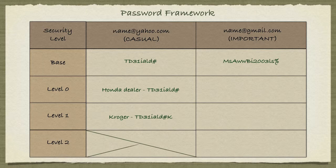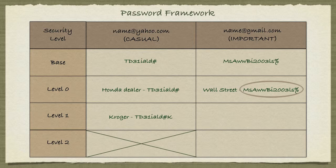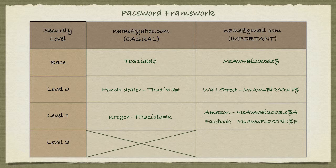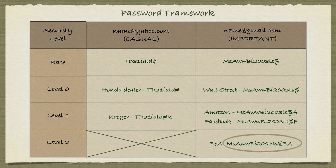I typically don't need level two security for casual sites. For my Wall Street Journal subscription I may use the important ID with level zero security. For Amazon I use the important ID with level one security, appending an A. For Facebook the last character becomes an F. For my Bank of America account I use the important ID with level two security, appending the letters BA — giving a strong, site-specific password.